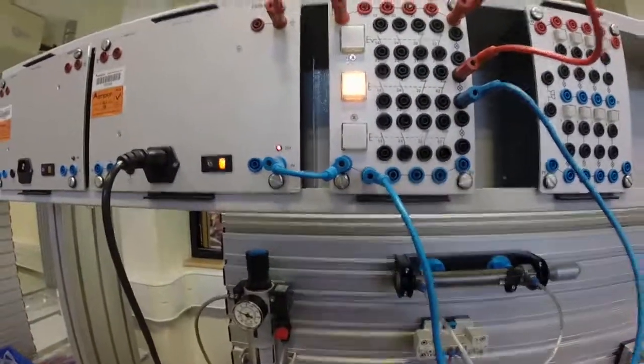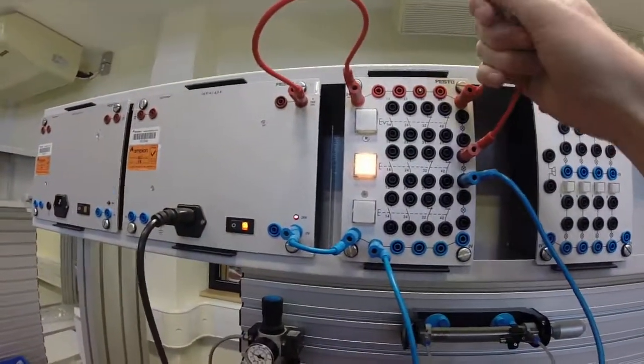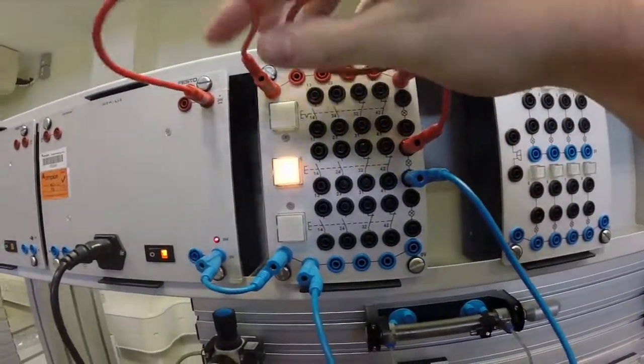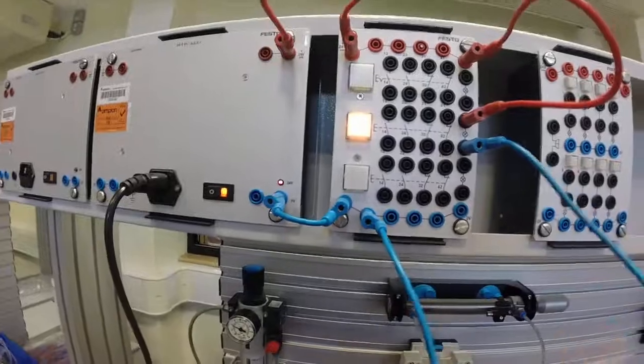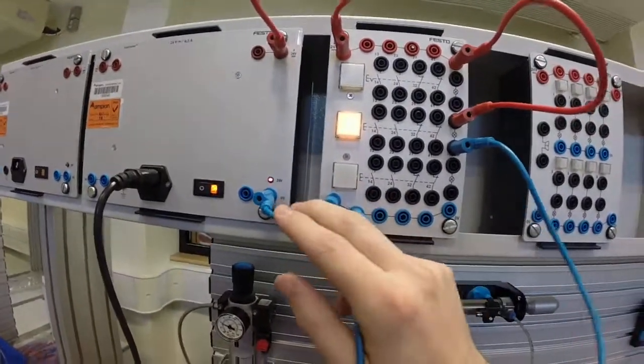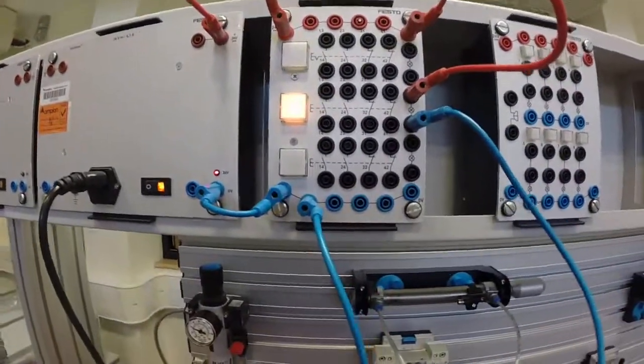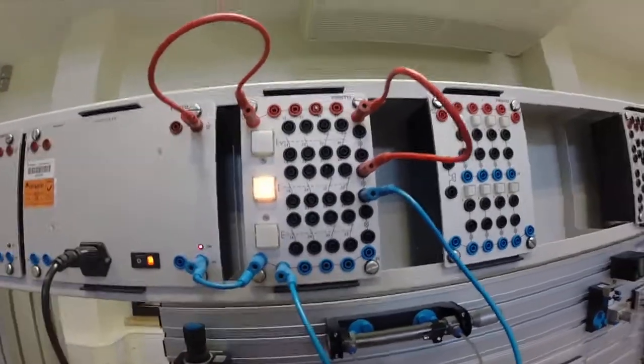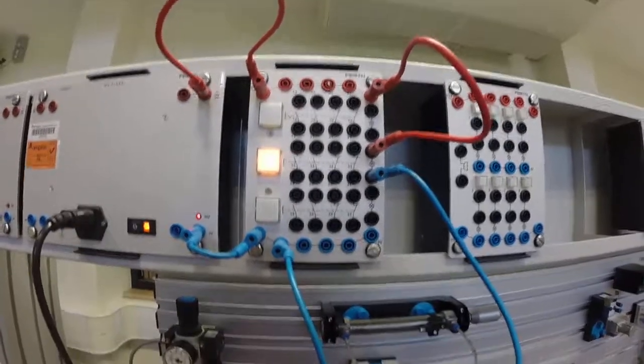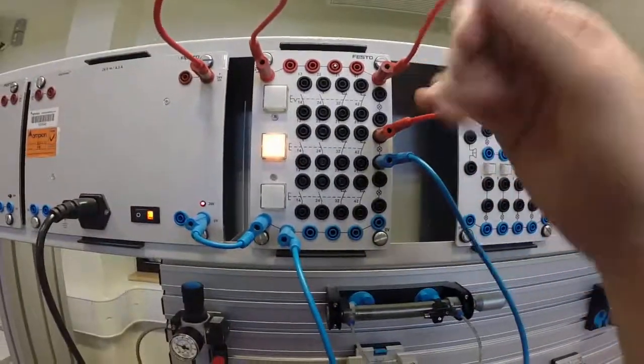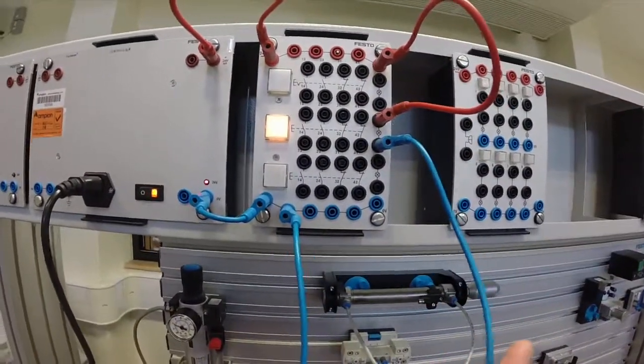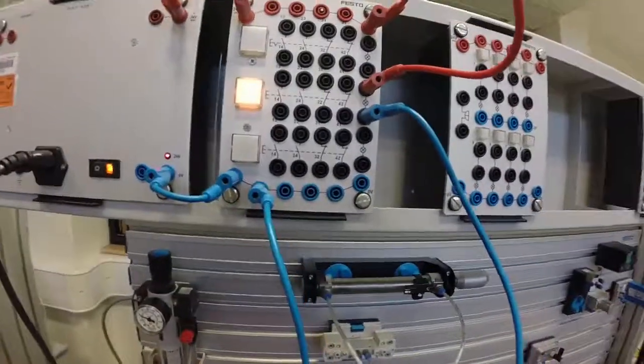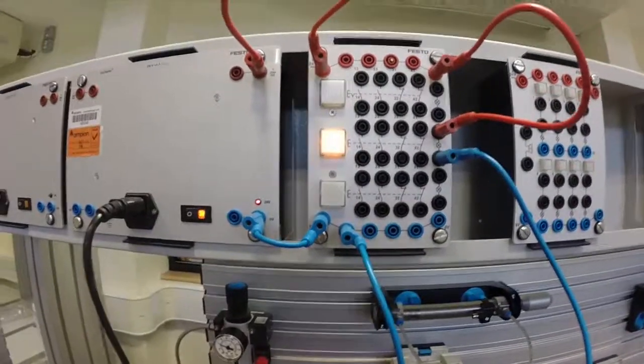Anywhere I'm connecting 24 volts, I usually use red, and anytime I'm going to ground I use blue. This allows fault finding to be easier. Sometimes we'll use black cables for the in-between parts. We use red for 24 volts and blue for zero, with black for connections in between.